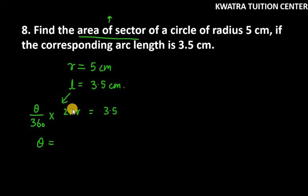So for theta, we will keep pi as it is so our calculations will be easy. 3.5 and the value of 360 will come to the right hand side, and 2 and R.